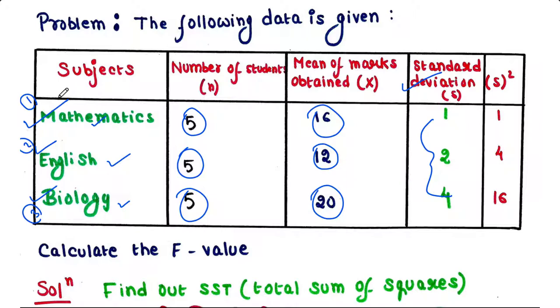We have studied null and alternative hypothesis in our previous lecture. If you want the link, I am putting it in the description box. So briefly, if there is no difference between these three data sets, null hypothesis should be accepted. And if there is a significant difference between these three data sets, null hypothesis should be rejected and alternative hypothesis should be accepted.